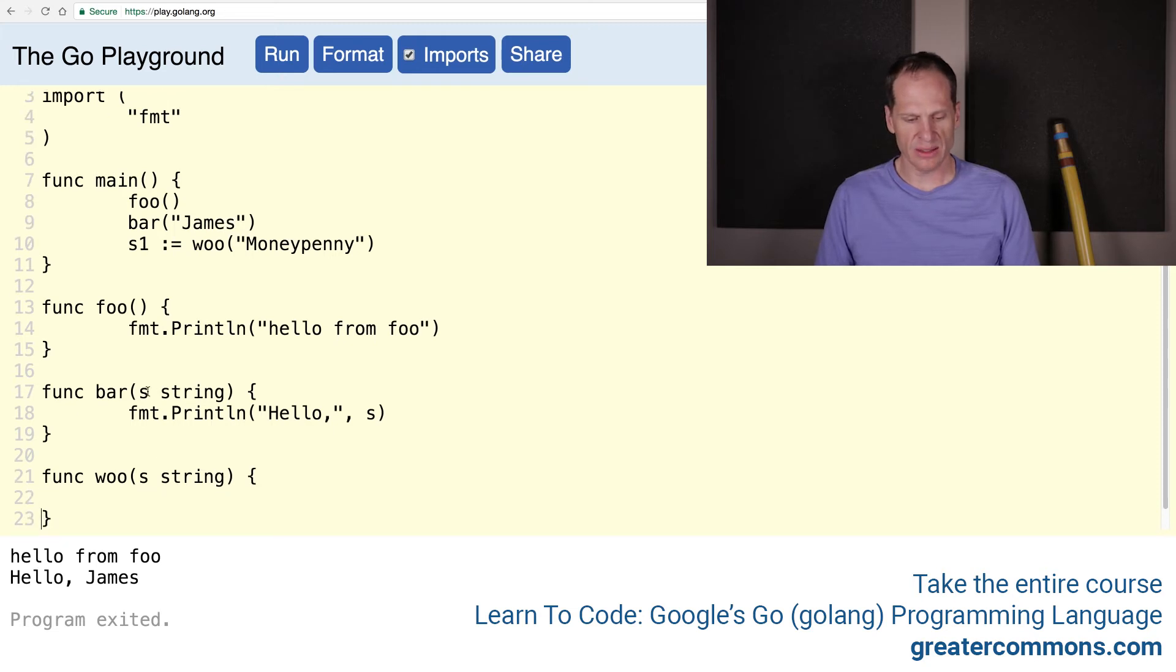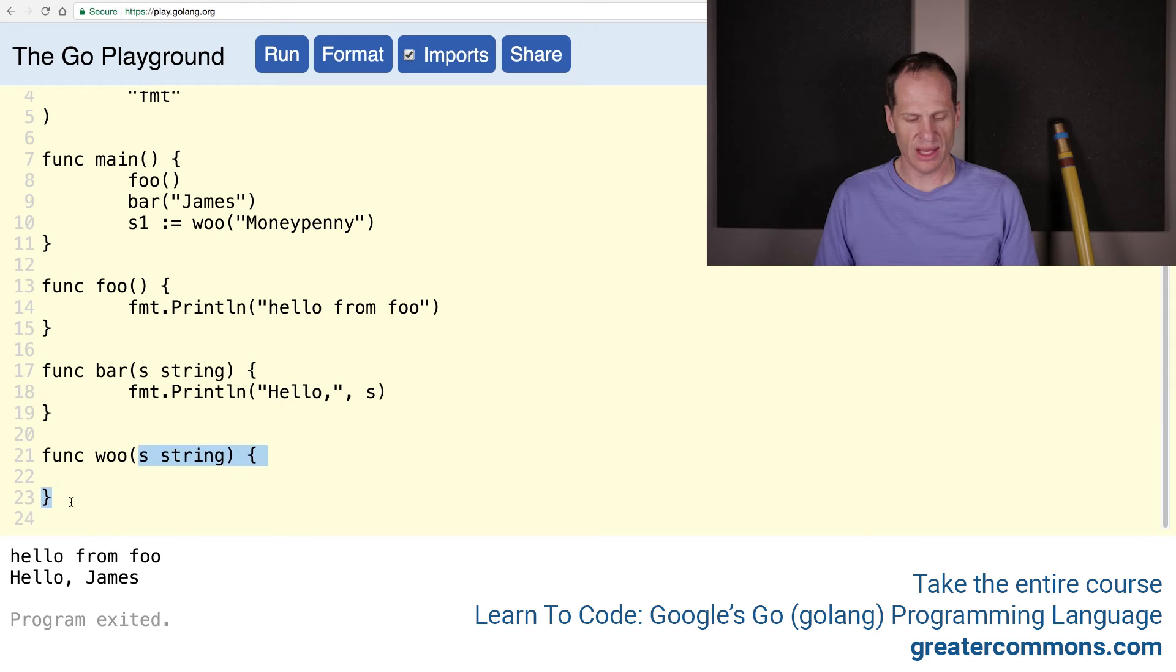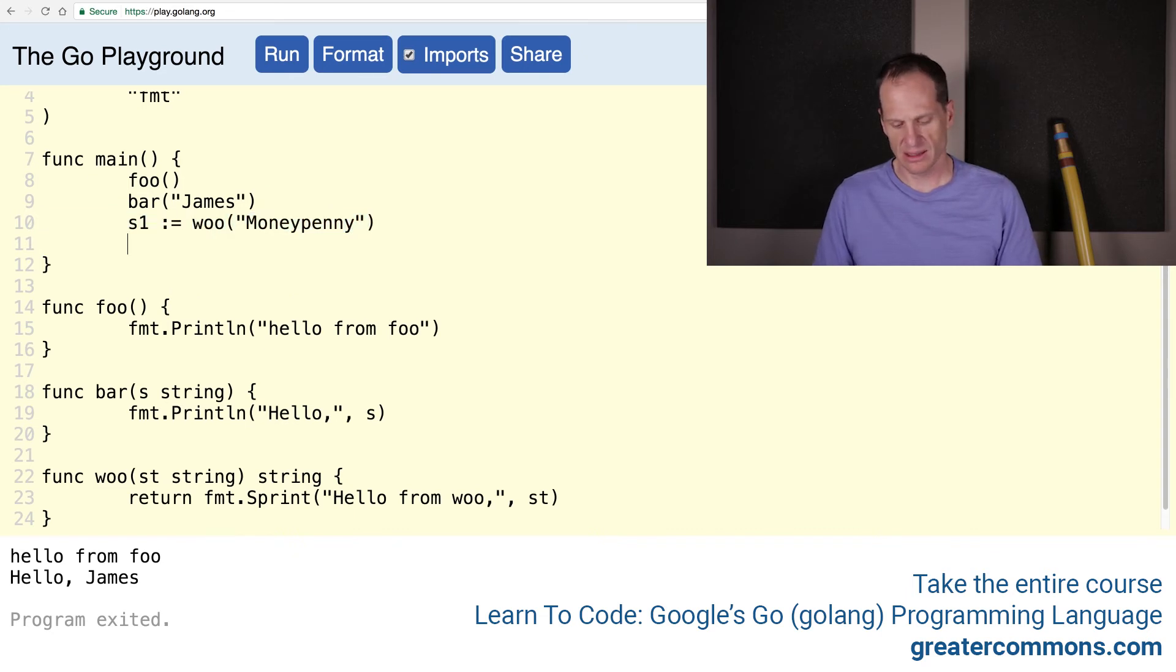So func woo. It's going to take in a string. The scope of this s right here is to there. The scope of this s right here is to there. So don't be confused by an identifier here, an identifier here of the same name. If I wanted to be clear, I could change it. But that's why I changed it up here. So to be clear, I'll just do st. That maybe will help avoid any confusion, but those are different variables. What I want to do here is I want to return. So I'm going to return, and I can do fmt.Sprint. And I can print: Hello from woo, st. So this is going to print to a string. String print. It's going to print all that, and then it's going to return that. So I need to return a string. So this returns a string. Then I'm going to assign that to there. And then I'm going to print line that right here. Format it and run it.